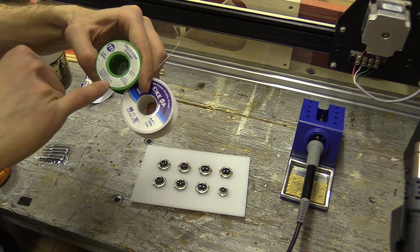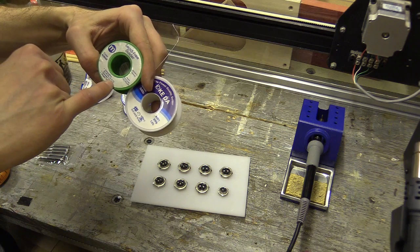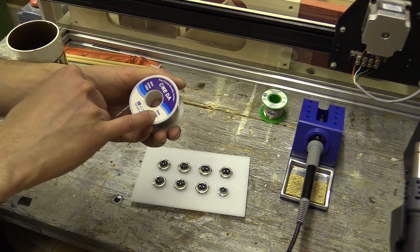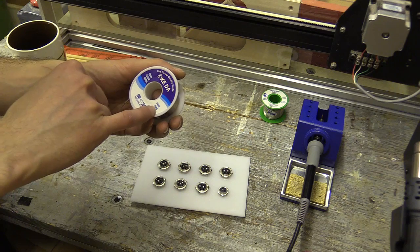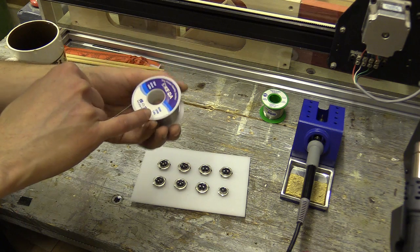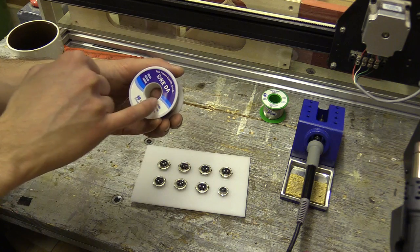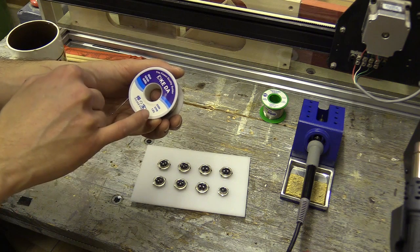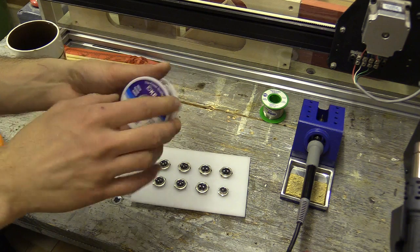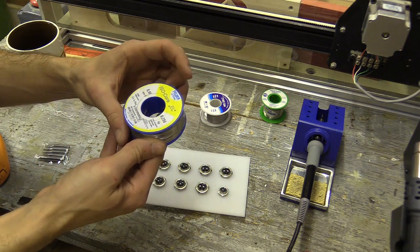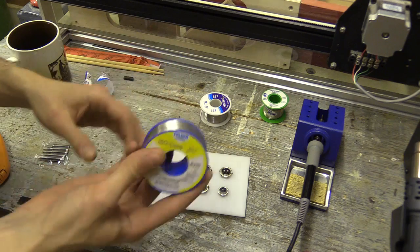I'm not sure if that's the flux, maybe this is 0.7 flux, I need to check what the CU stands for. 63SN, 37pb and 1.2% I'm assuming is the content of flux, and then that's the split between leaded solder and tin maybe.